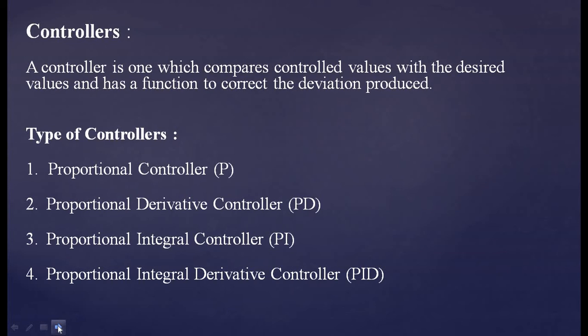Now we are going to go through the main point of the video — different controllers. A controller compares control values with the desired values and has the function to correct the deviation produced. Basically, in a closed loop system, the actual output is continuously compared with the desired output, and whatever error is produced is controlled using controllers. The different types are: proportional controller, proportional derivative controller, proportional integral controller, and proportional integral derivative controller — P, PD, PI, and PID controllers.